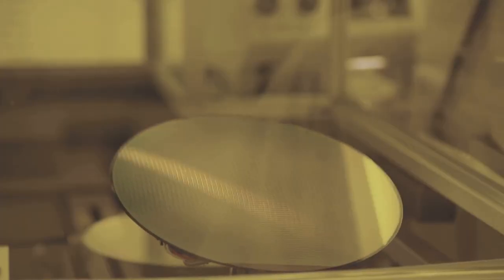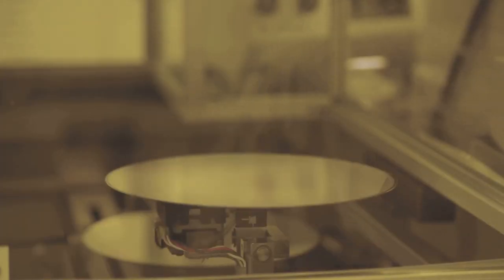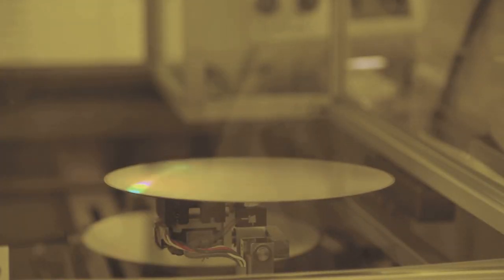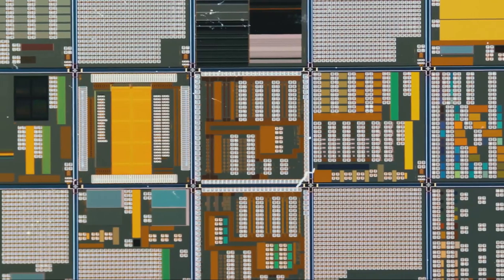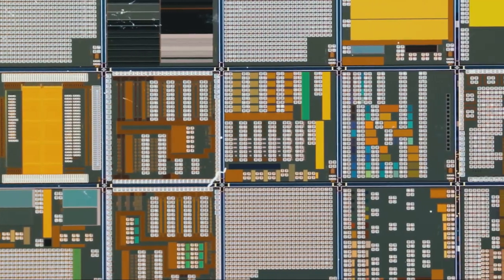Then comes etching, a process of carving out specific areas of the silicon wafer. Like a sculptor chiseling a block of marble into a beautiful statue, etching gives the chip its final shape. From a simple silicon wafer to a functional chip, the transformation is nothing short of magical.